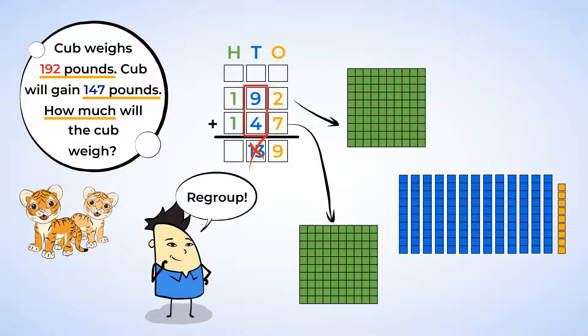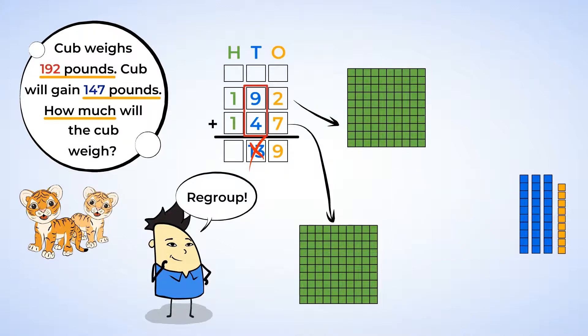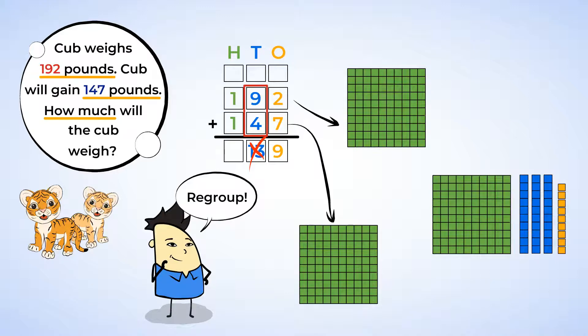In addition, when you regroup tens, you take the ten ten sticks and exchange them for one hundred plate. That's because ten tens equal one hundred. The number that the blocks represent hasn't changed since ten ten sticks is the same as a hundred plate, and we are still left with three ten sticks, so put a three in the tens place of our answer.